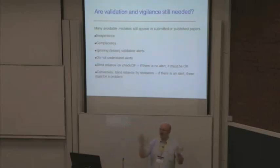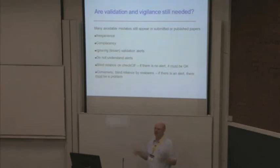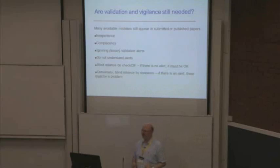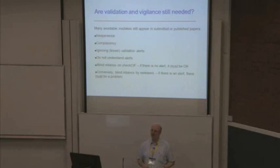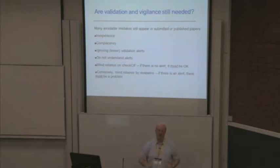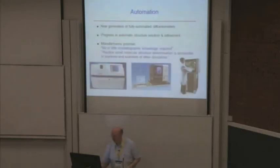You might say we've made everybody aware of the need for validation, so do we still need it? Unfortunately yes, because even in publications in various journals today there are problems. This comes from inexperience or just plain laziness, ignoring some of the less severe alerts. Even though they're not severe they might still mean something, or people just don't understand the alerts properly. There's also blind reliance on checks — if there's no alert, there's no problem. Are you sure? And reviewers tend to do the other thing: there's an alert, so there must be something wrong. People need to learn to understand what these alerts are telling them.